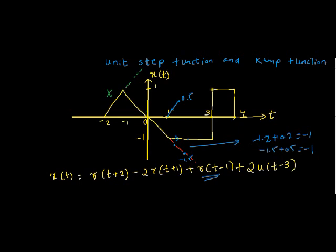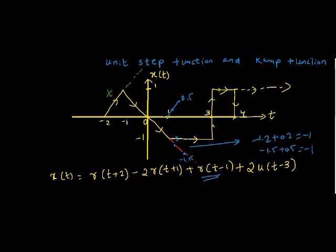So now the signal will traverse in this way. Up to now, X of t equals R of t plus 2 minus 2 times R of t plus 1 plus R of t minus 1 plus 2 times u of t minus 3, which gives this signal. But we don't want the signal to go in this fashion, so we subtract another unit step at t equal to 4 with magnitude 1. So we subtract u of t minus 4 and we will get the correct signal.